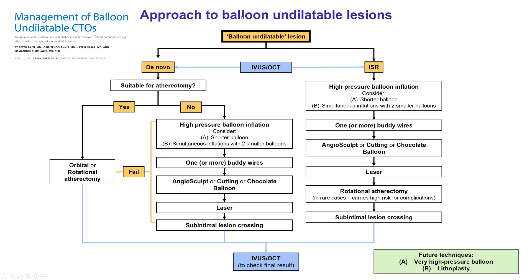Essentially, we now have a balloon undilatable lesion. Although it's not in-stent restenosis, it is essentially within the stent. This is different from de novo undilatable lesions, where atherectomy is usually not advised due to the risk of complications. The usual approach is high-pressure inflations with shorter balloons or two simultaneously inflated balloons — the so-called confluent balloons.